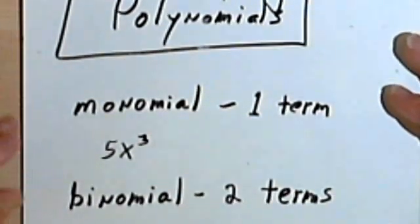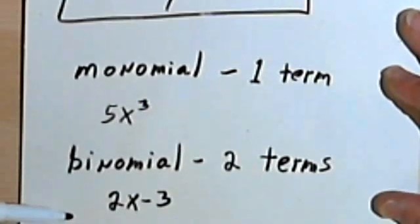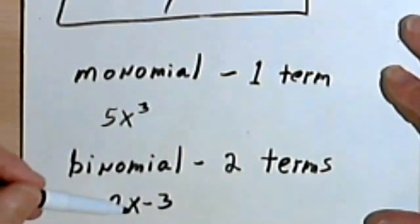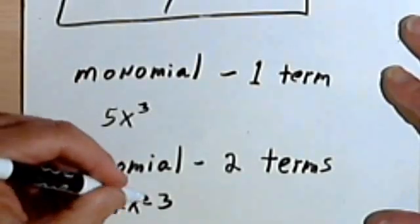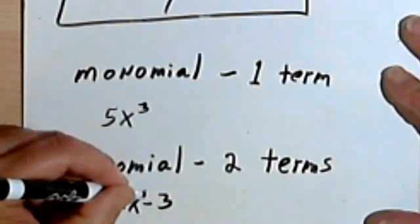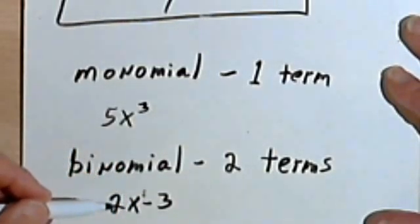If we have two terms, that's going to be a binomial, bi meaning 2, like a bicycle. And so 2x to the negative 3, because it's made up of two monomials, or two terms, is a binomial. The exponent is a 1. So this is a first-degree binomial.